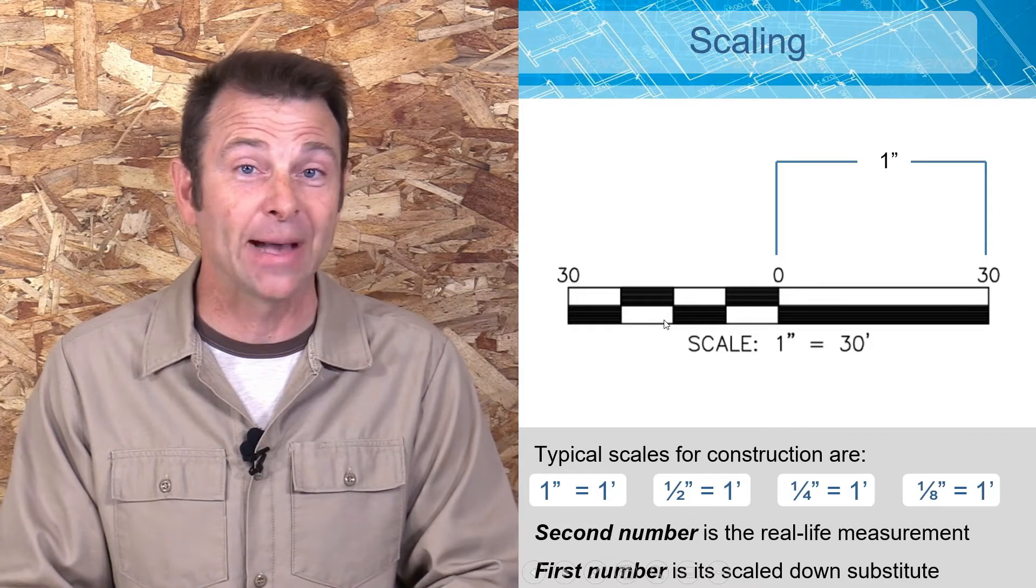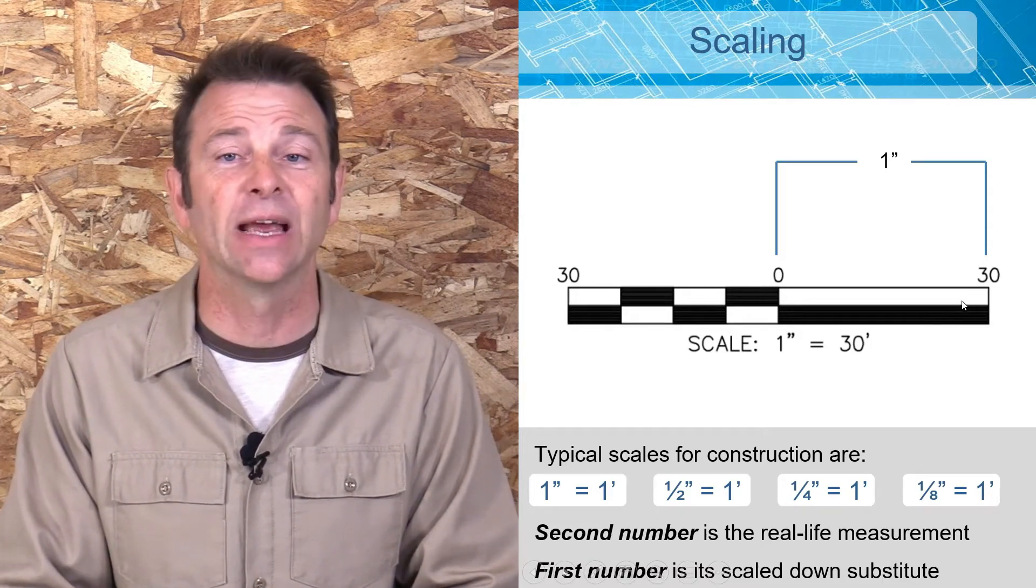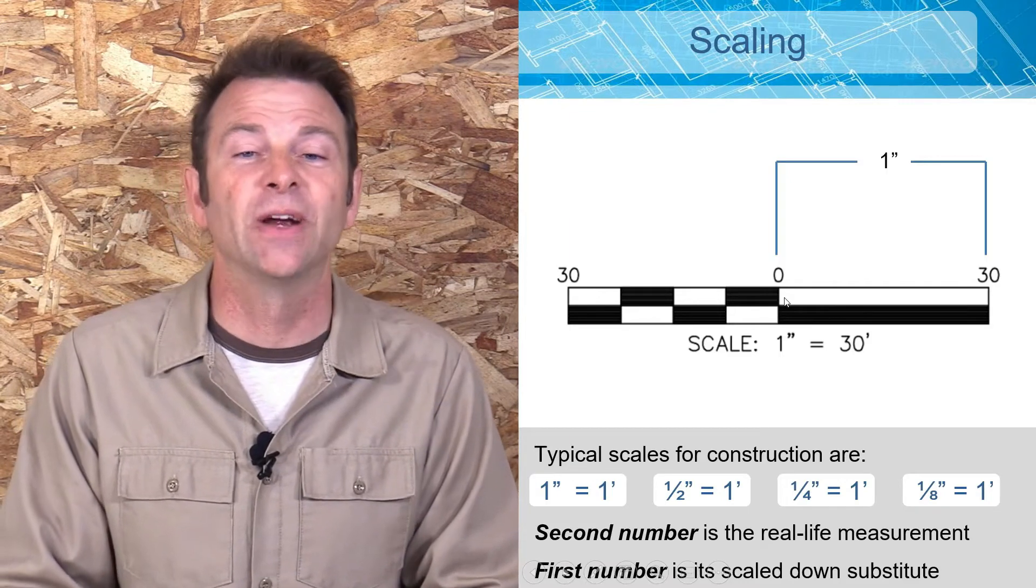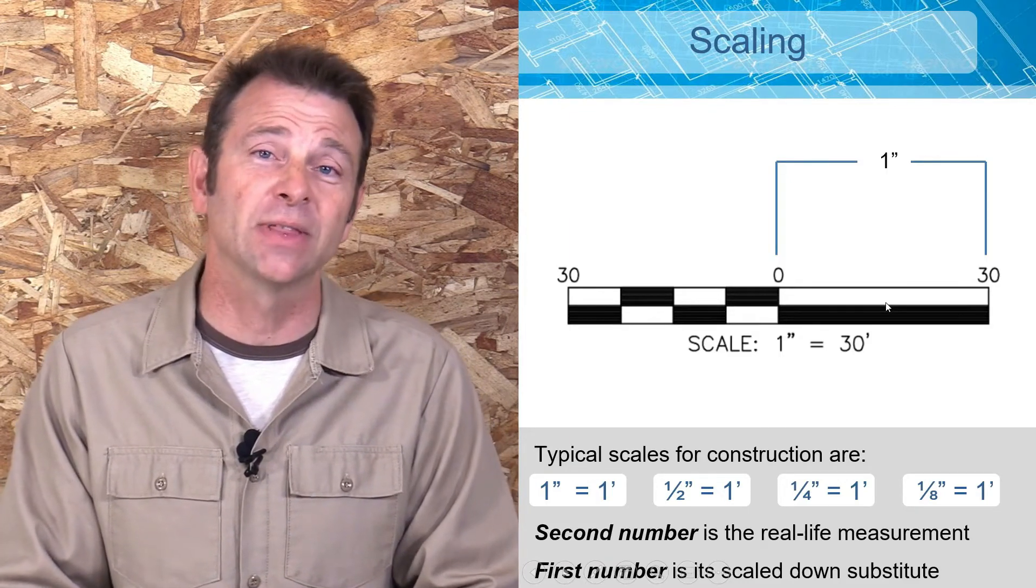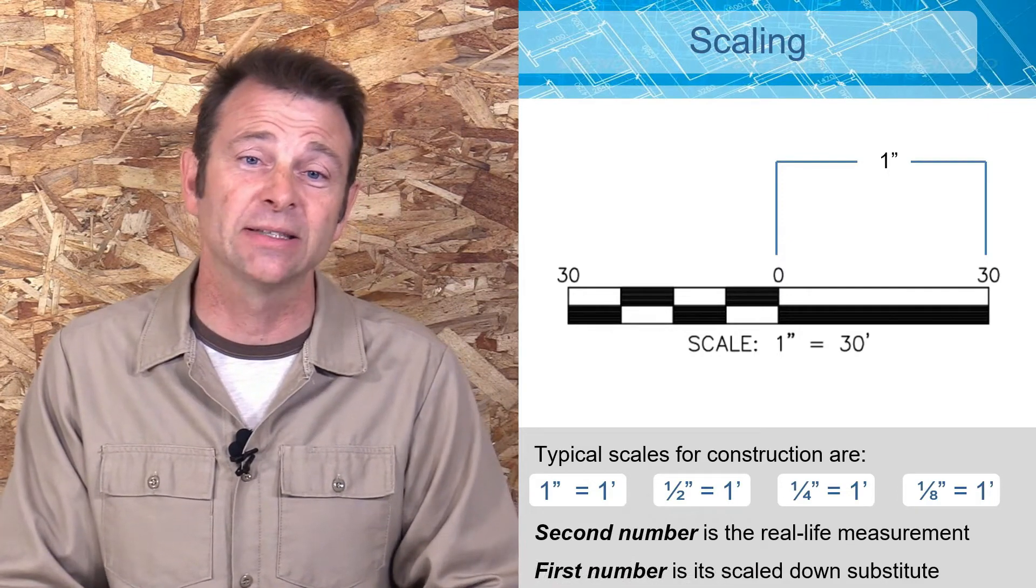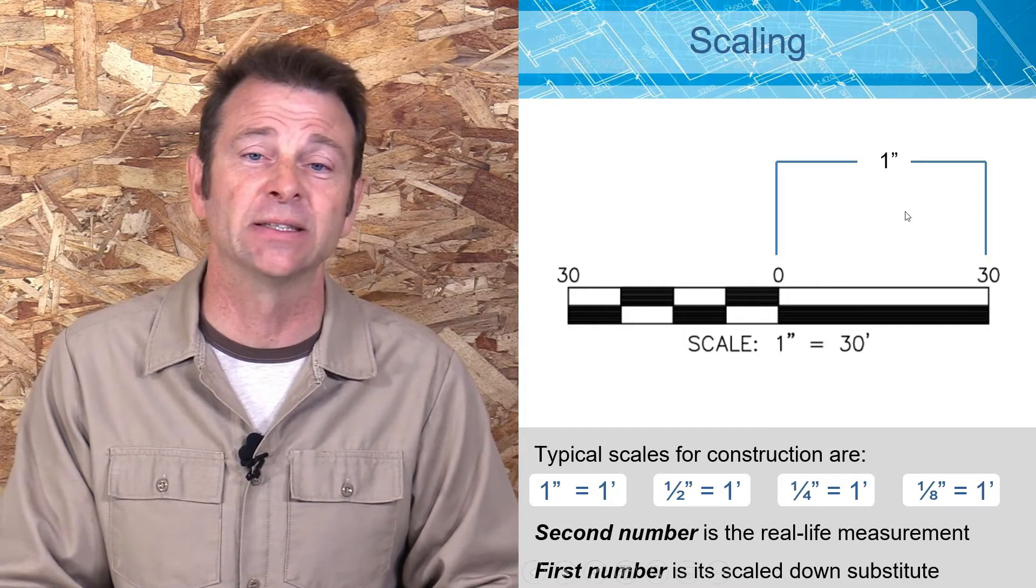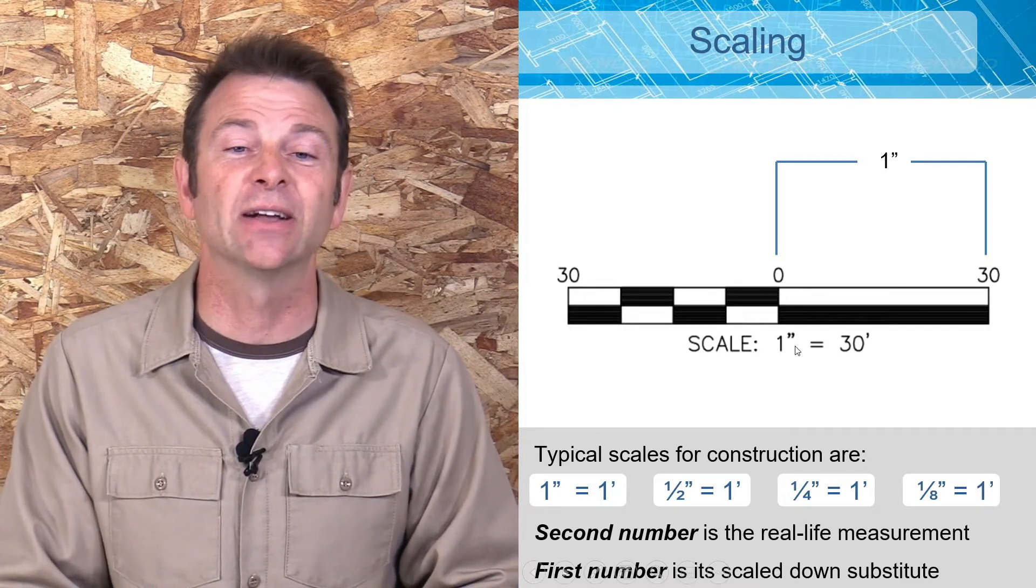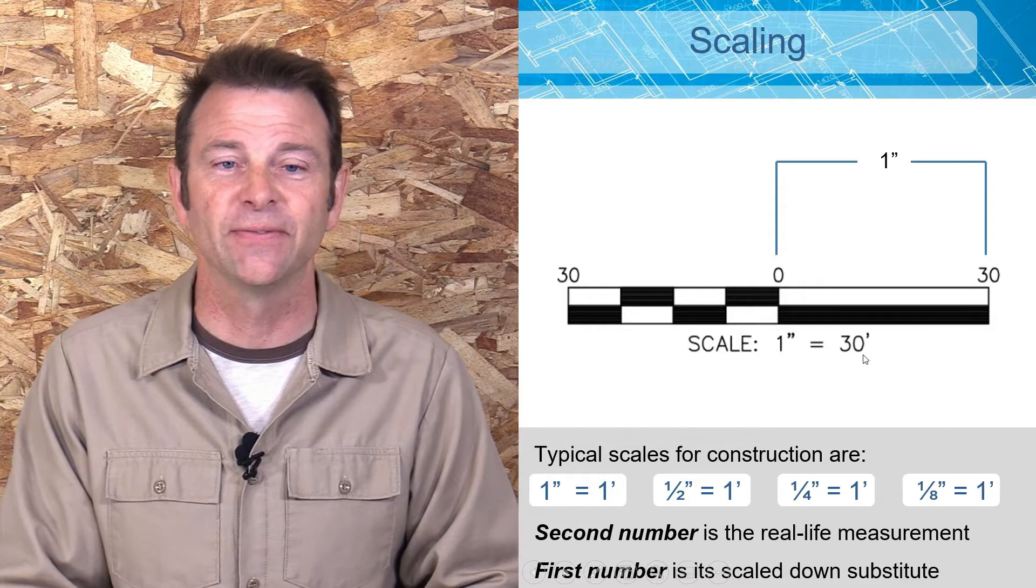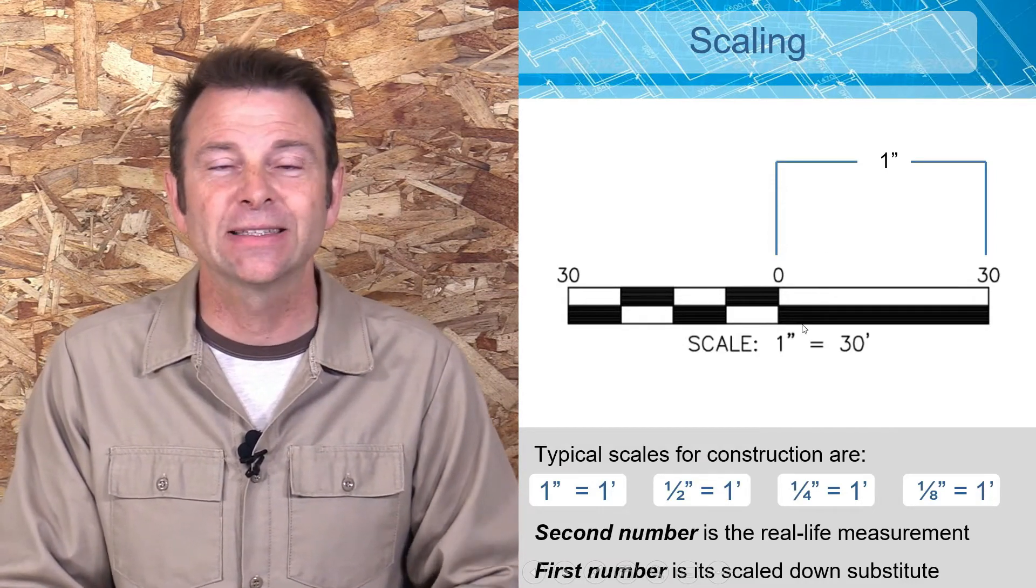When we're talking about plans, our scaling gets very specific. We're going to call out a specific scale. We might even have a small ruler—you might be used to this on maps. This is a very common thing to see on a map. You can actually use a ruler to verify the scale and then to measure things on those plans if you know what the ratio is or the representation of the specific size on the plans to the real life dimension.